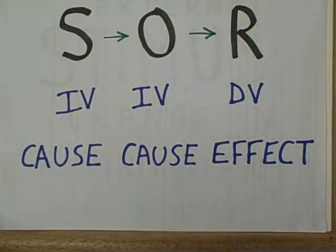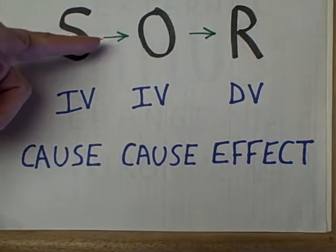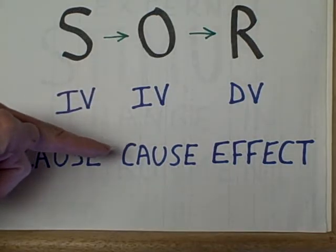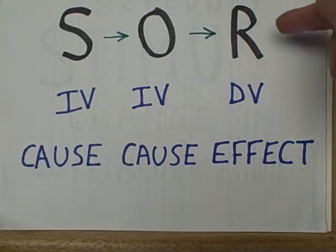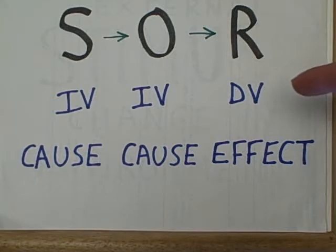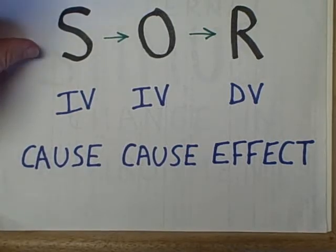We're going to see that a stimulus is actually an independent variable, a potential cause of behavior. Organismic background factors are another important independent variable, another set of causes or influences upon behavior. We can regard each response as a dependent variable — in other words, consider it as some kind of effect influenced by both external stimuli and internal organismic background factors.